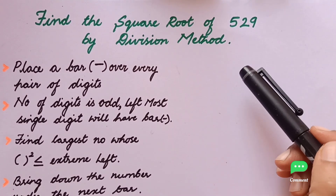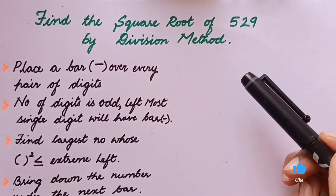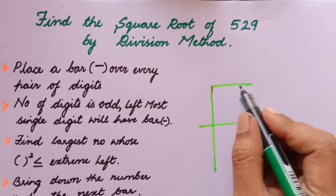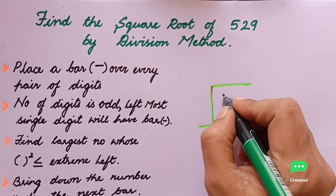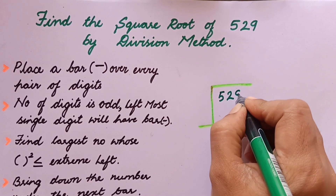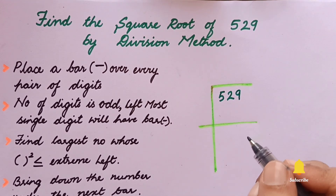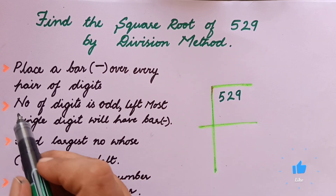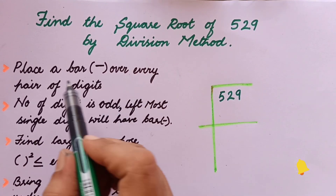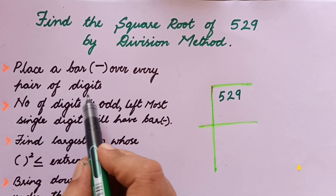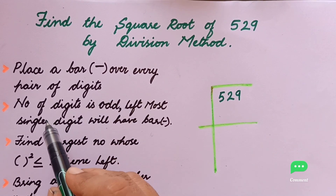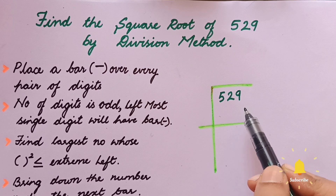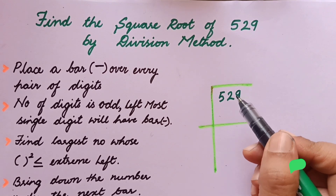First we'll draw the lines and write 529 here. The first step is to place a bar over every pair of digits. Here we have three digits — an odd number of digits — so we can still place the bar.